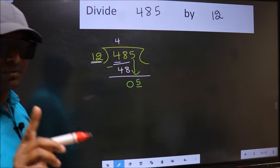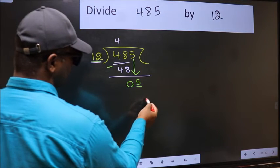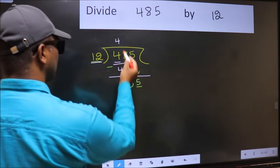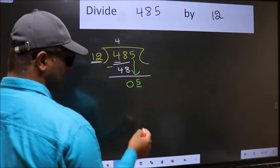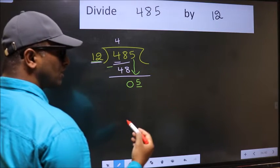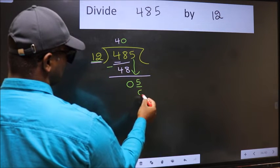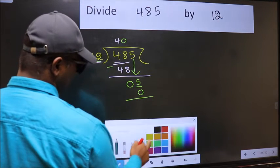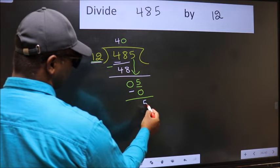Instead, what you should think of doing is which number should we take here. If I take 1, we will get 12, but 12 is larger than 5. So what we should do is we should take 0. So 12 into 0, 0. Now you should subtract: 5 minus 0, 5.